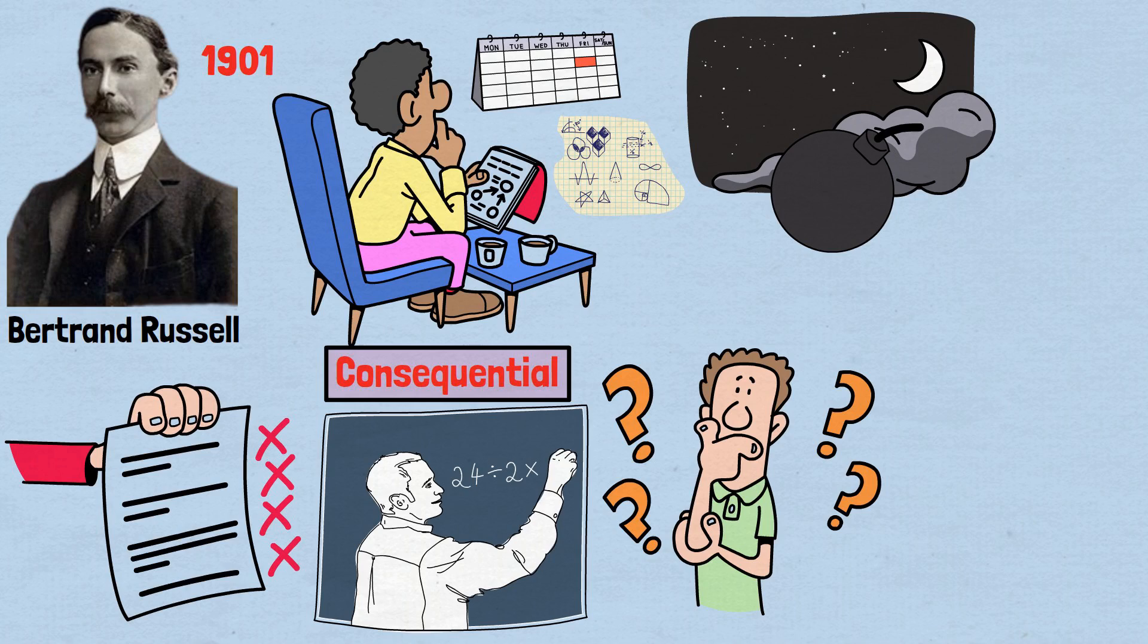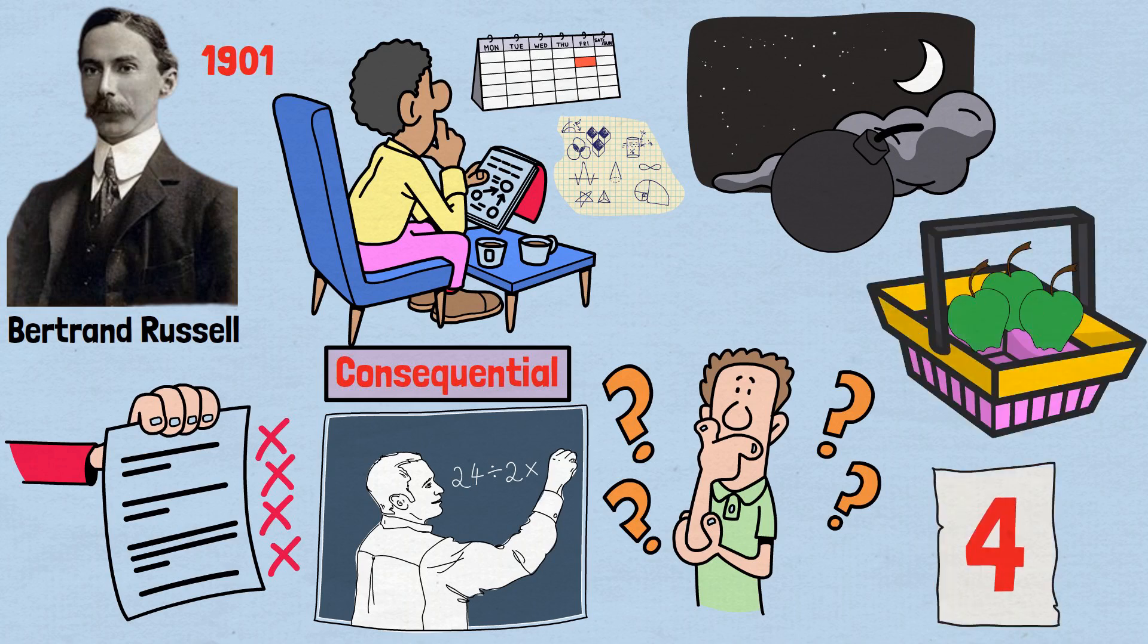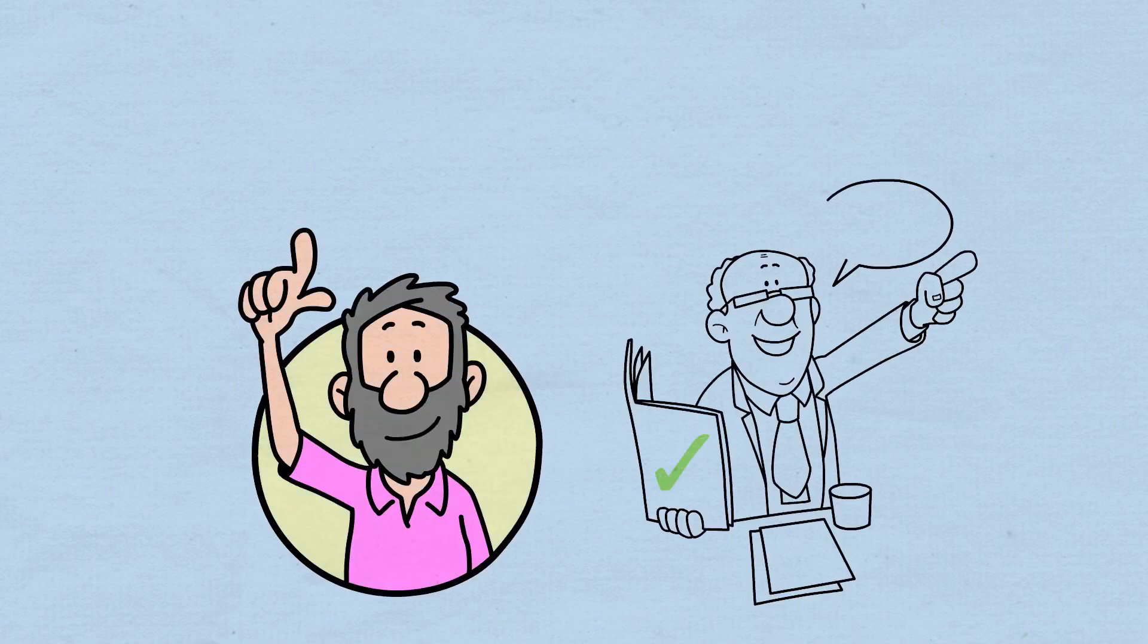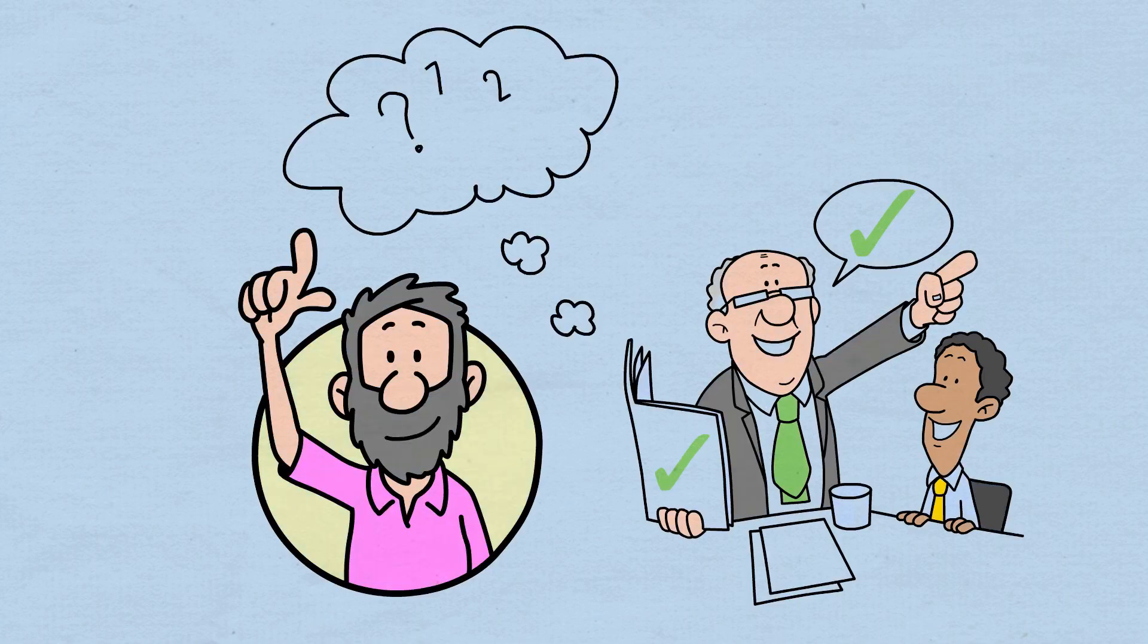What is a number, really? Not the symbol four scribbled on paper or four apples sitting in a basket, but the abstract concept of four itself. This deceptively simple question would lead to one of the greatest intellectual crises in the history of mathematics.